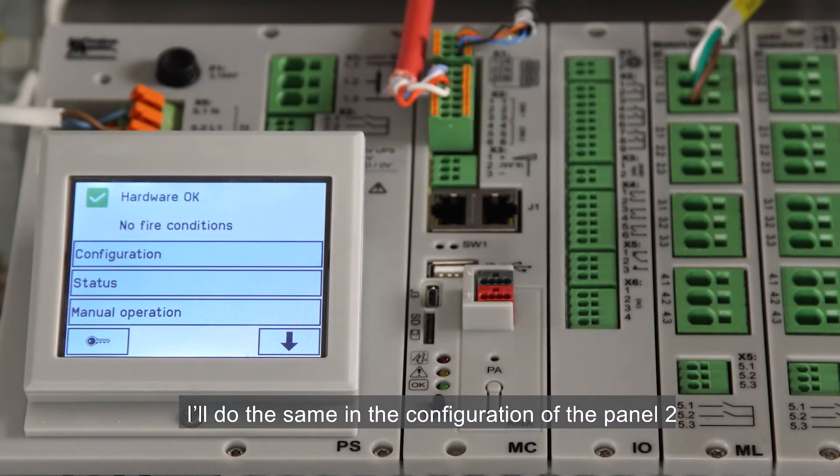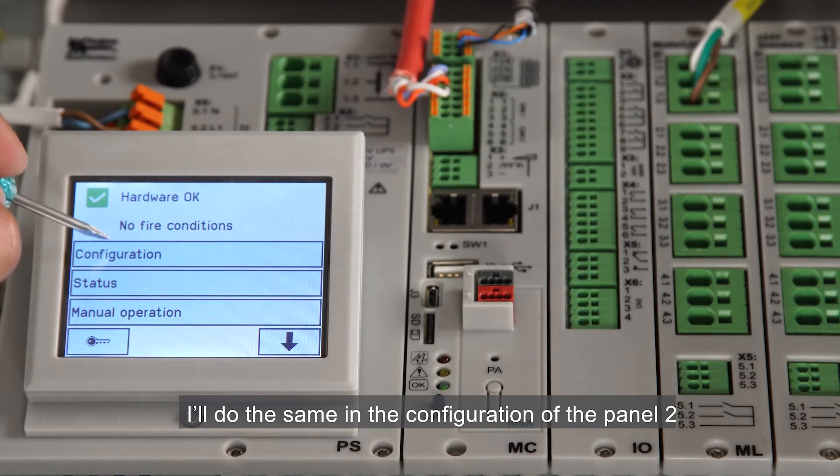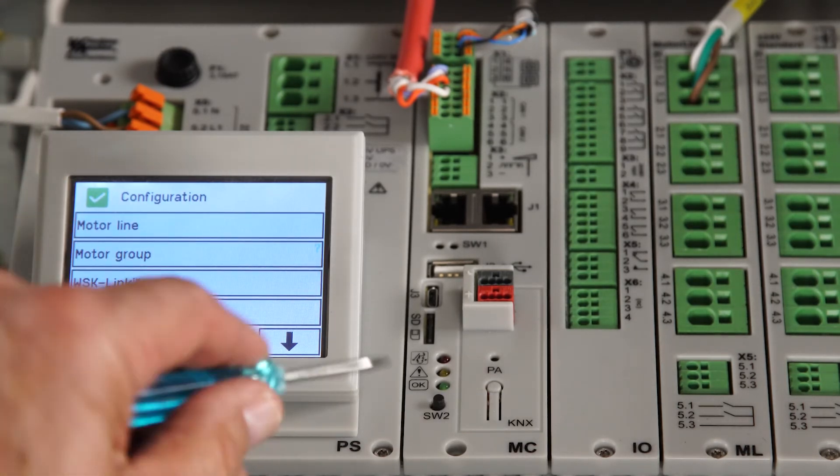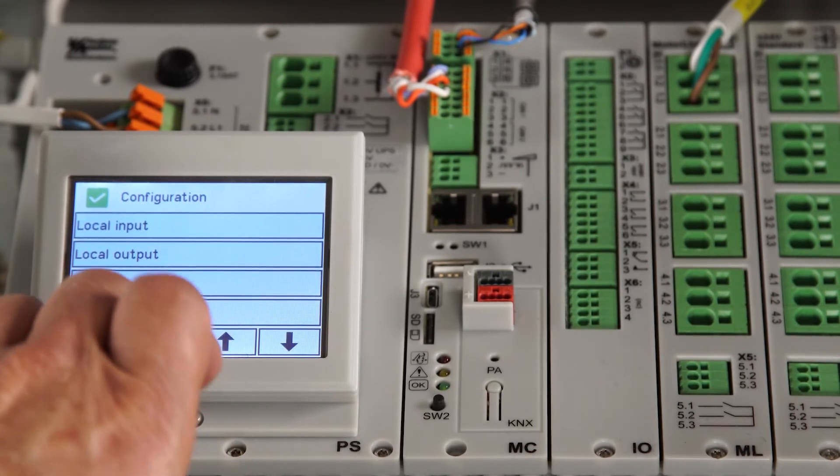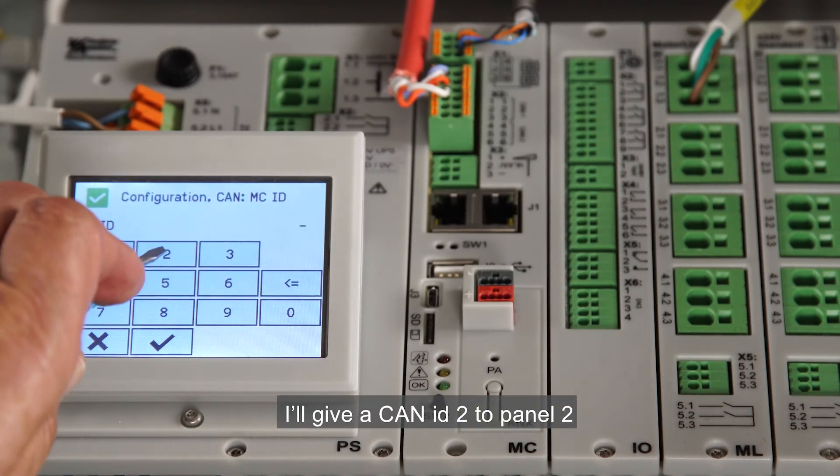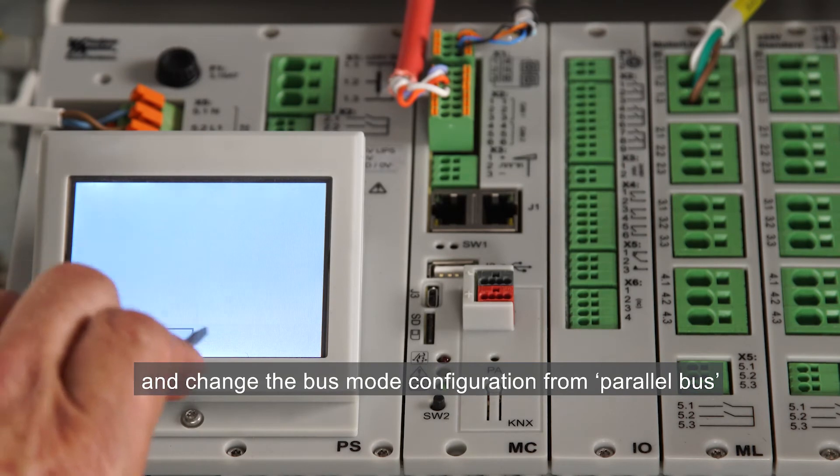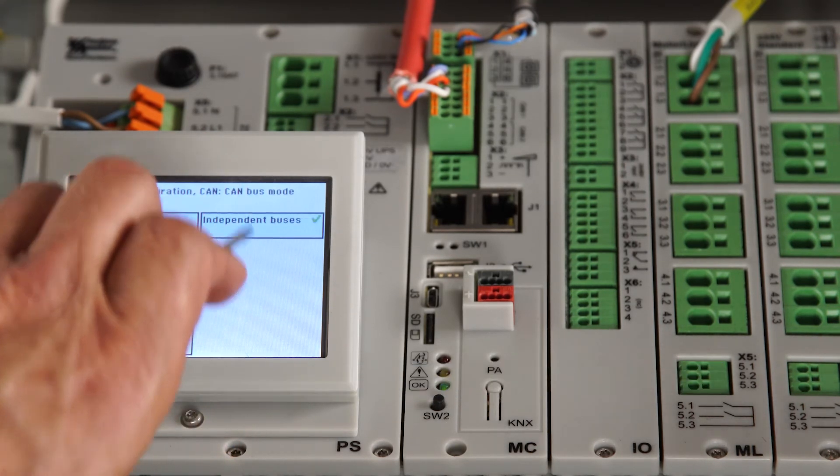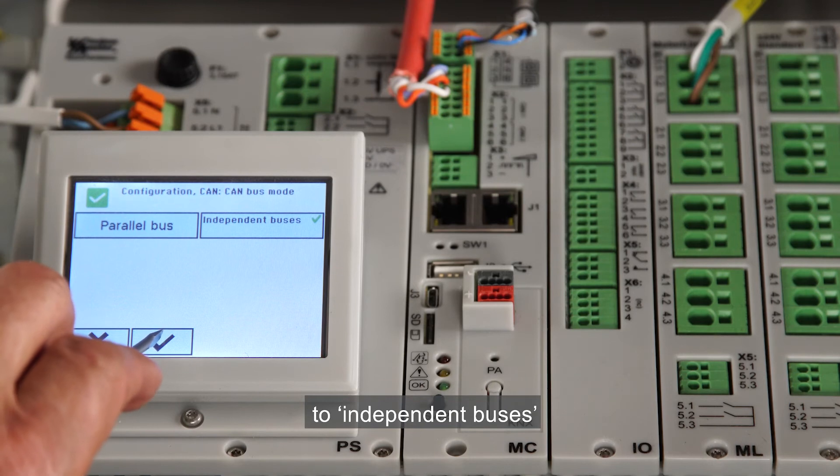I'll do the same in the configuration of panel 2, the slave panel. I'll give a CAN ID to panel 2 and change the bus mode configuration from parallel bus to independent buses.